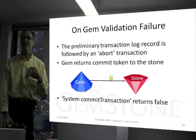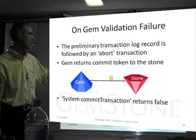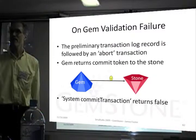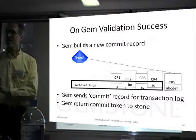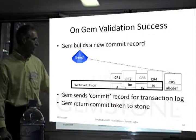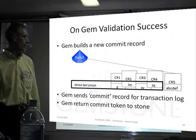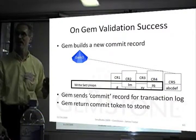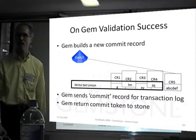If this fails — if I can't commit — then I go back to the stone with the token and say: you know that transaction I was working on? Forget it. Put it in an abort record saying that transaction is not valid. If I succeed passing the various checks, then I need to build a new commit record. This commit record is going to have the objects that we've written. We send the commit token and commit record for the transaction log back to the stone. This is our way of saying the commit succeeded — we validated there aren't any conflicts and there aren't any write lock conflicts.